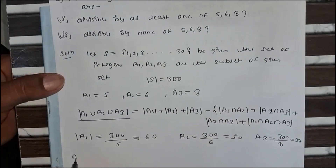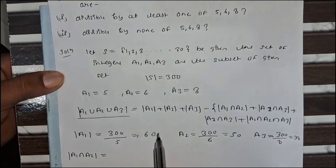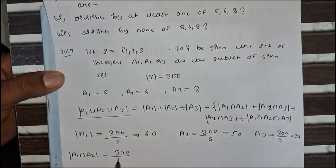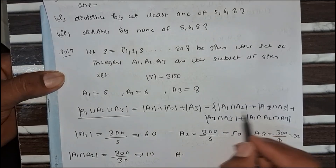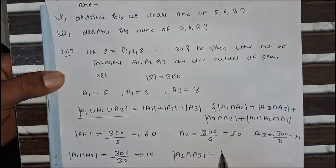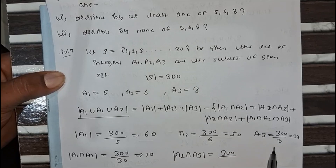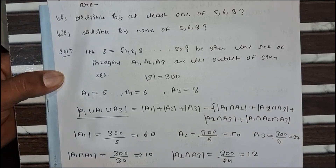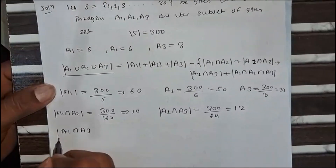Now for A1 ∩ A2, we take the LCM of A1 and A2, which is LCM(5, 6) = 30. So 300 divided by 30 = 10. Then for A2 ∩ A3, LCM(6, 8) = 24, so 300 divided by 24 = 12.